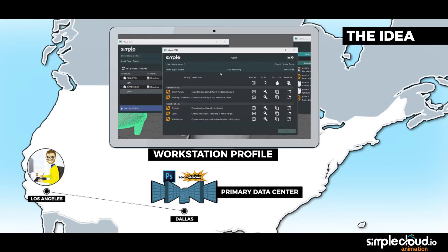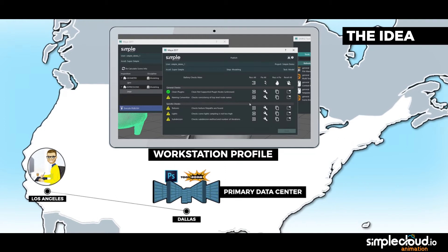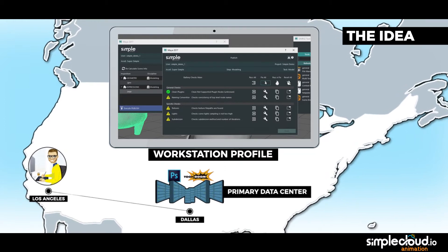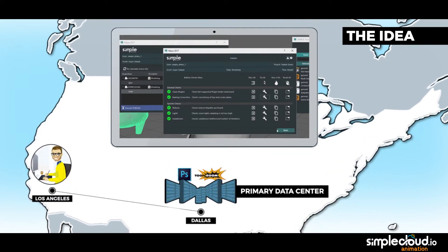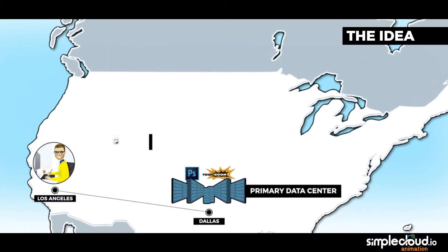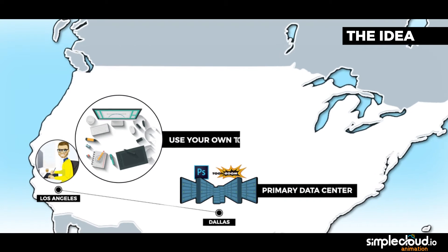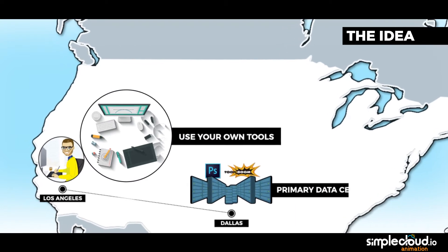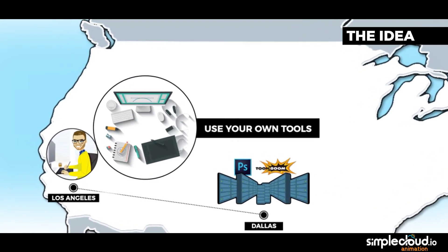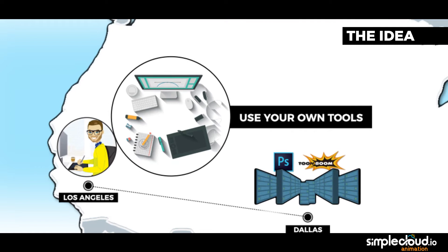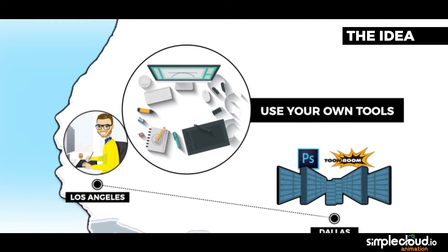After a few days, he has a first release of his story ready, so he publishes it via the integrated pipeline. He was able to use his own Wacom board to generate the content directly online, so he didn't need to change any of his tools.